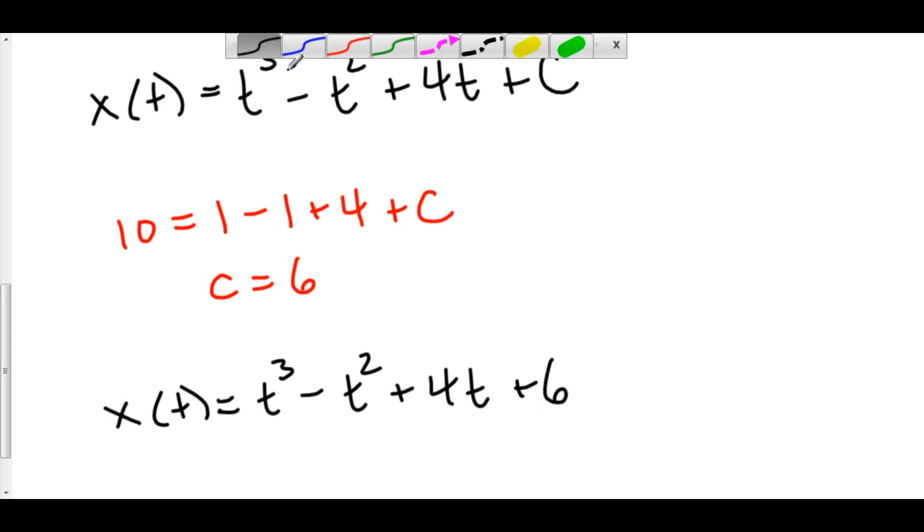However, one more time, let's take a look at what this means. This is my initial position x naught. This in here is my change in position from zero to any time t. And we'll call that v(u) du, since we don't want to call it t.